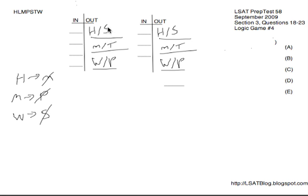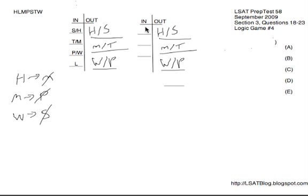When we have all three out — one from each pair — everything else has to be in because the out column is full. So we're going to have one of S/H in, one of T/M in, one of P/W in, as well as L. In the other diagram with four out, there's still a lot more ambiguity. We don't know which one we're going to use, but we've determined a great deal up front that we'll make use of over the course of the game.